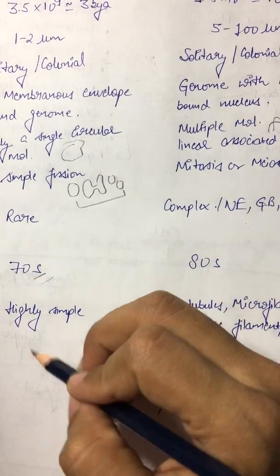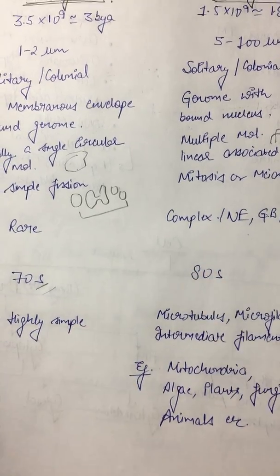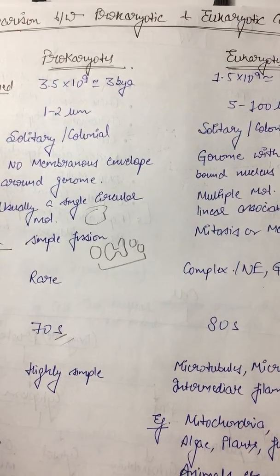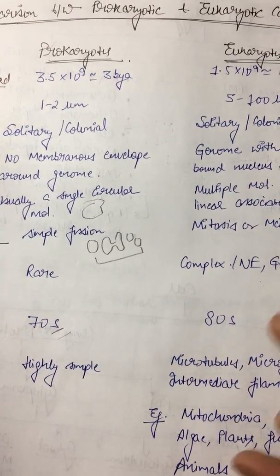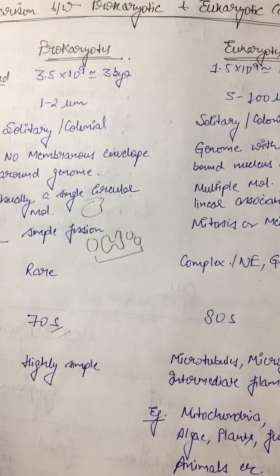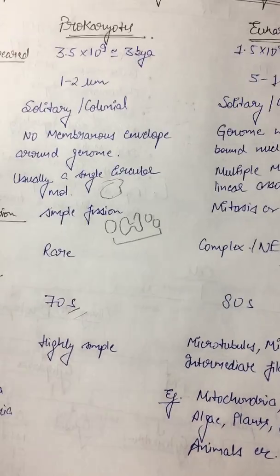A kitchen will be there, a dining room will be there, guest room will be there. But in prokaryotes a single room will be there which will be occupied for different functions. Now we will see the structure of a prokaryotic cell. This is a diagram, let's have a quick view.